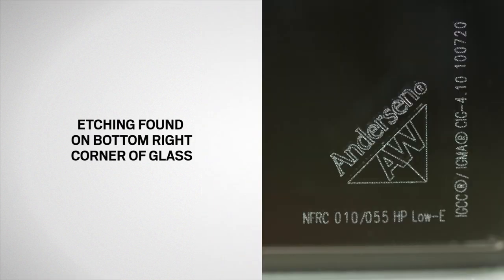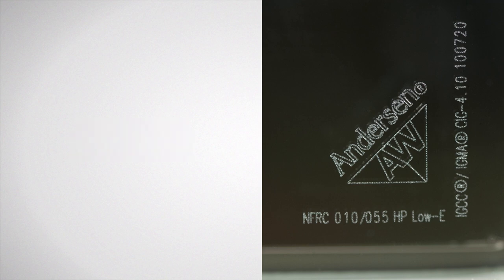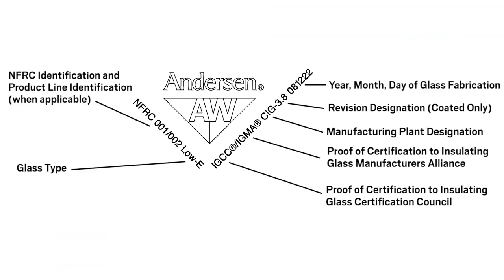Lastly, in the bottom right hand corner of the glass, you'll find an Andersen logo etched into the glass. Here you can find important information such as the glass type and manufacture date for replacement and warranty purposes.